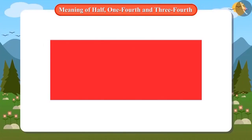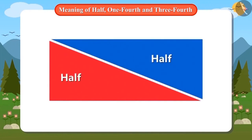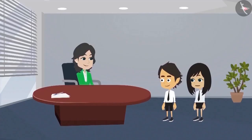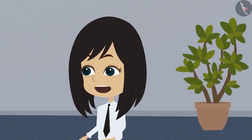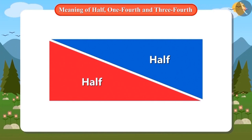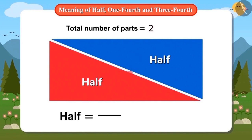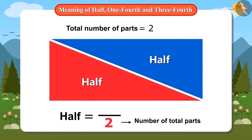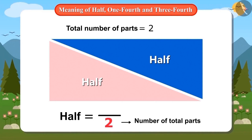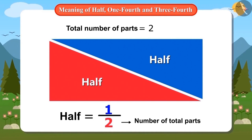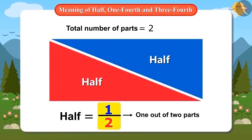Look, this is a rectangle. When it is divided into two equal parts, then one part is called half of this entire shape. But ma'am, how do we write it as a number? Very easy. First, we will see how many parts of the whole object there are. There are a total of two parts of this entire rectangle. We will draw a line and write two below it. Now tell me, how many of these two parts will be called half? One of these two parts will be called half. Absolutely right. So we will put one above this line. It means one out of two parts. It is read as one half — that is, one out of two parts.